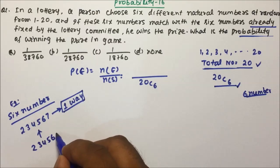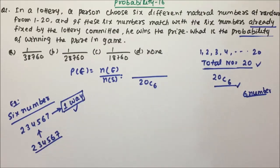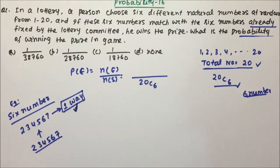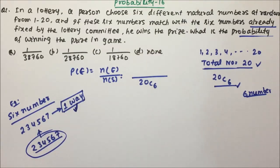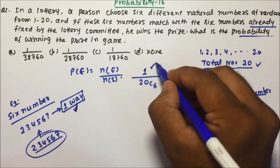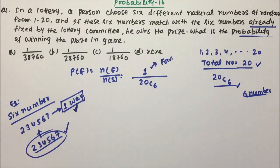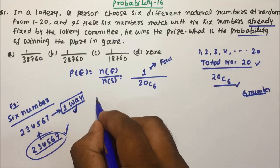So if you are also selecting 2, 3, 4, 5, 6, 7 — whatever has been fixed by the lottery committee — then only you will be able to win. There is only one way for you to win: if the selected numbers match with whatever the lottery committee has fixed. So this is your one favourable event — you get that exact bunch of numbers and then only you will be able to win the lottery.